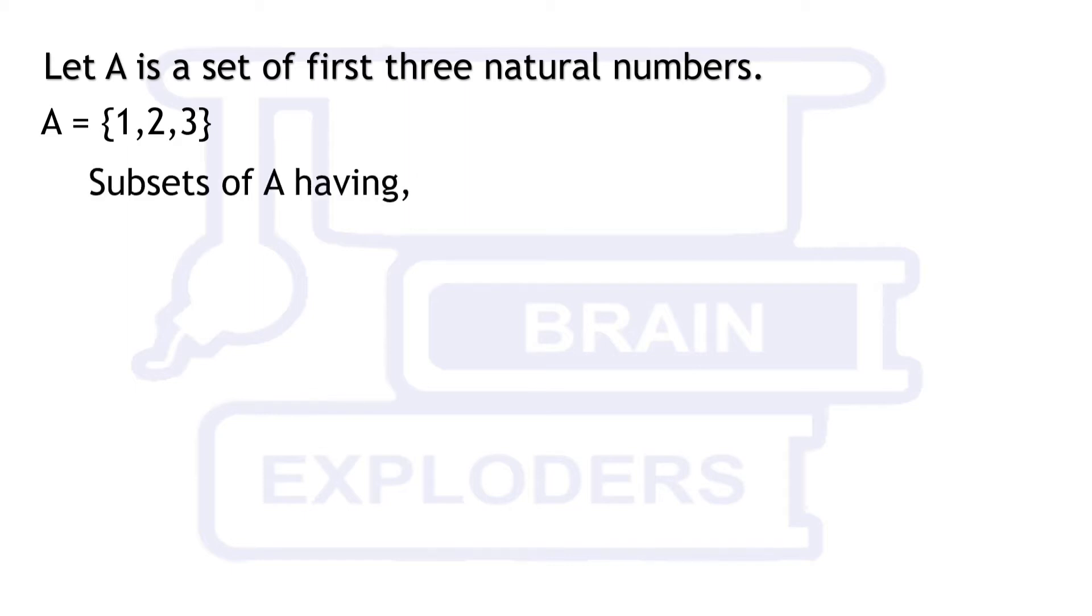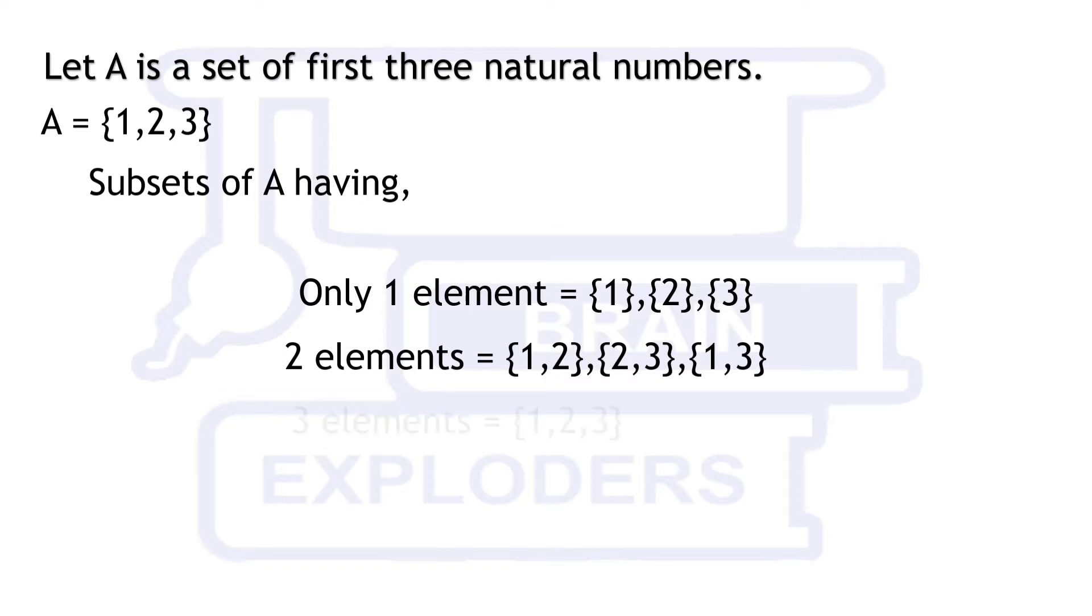Subsets of A which have only 1 element in them are 3 in number. There are exactly 3 subsets of A which have 2 elements and only 1 subset which has 3 elements.